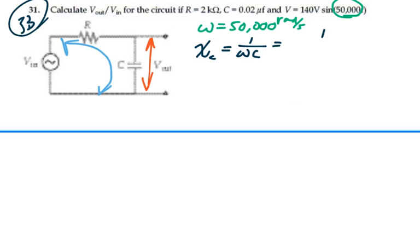Which is going to be 1 over 50,000 times the capacitance, which is 0.02 times 10 to the minus 6 farads, and that is equal to 1,000 ohms.